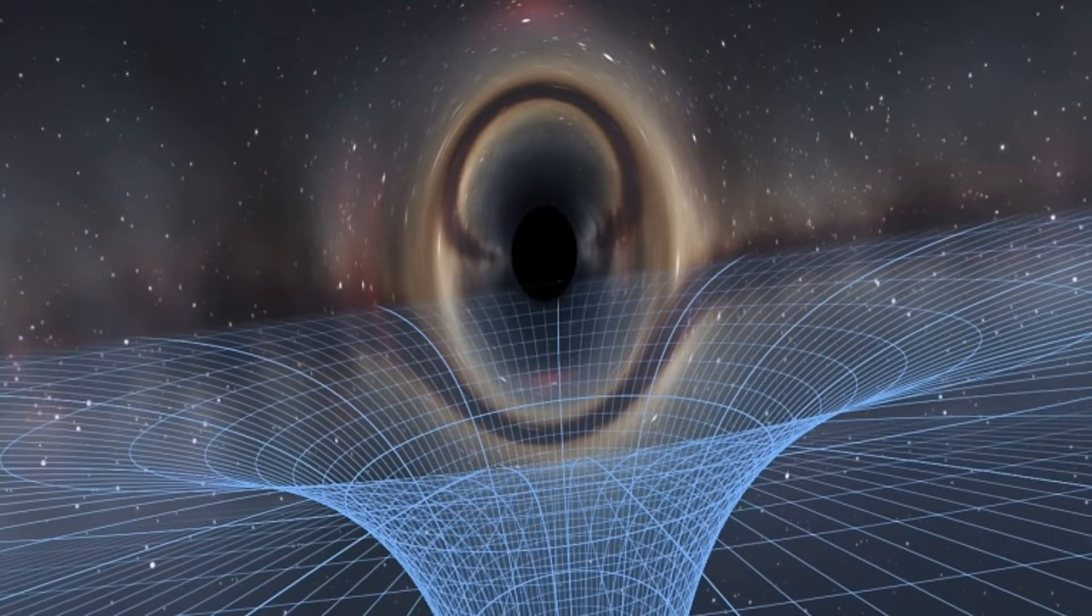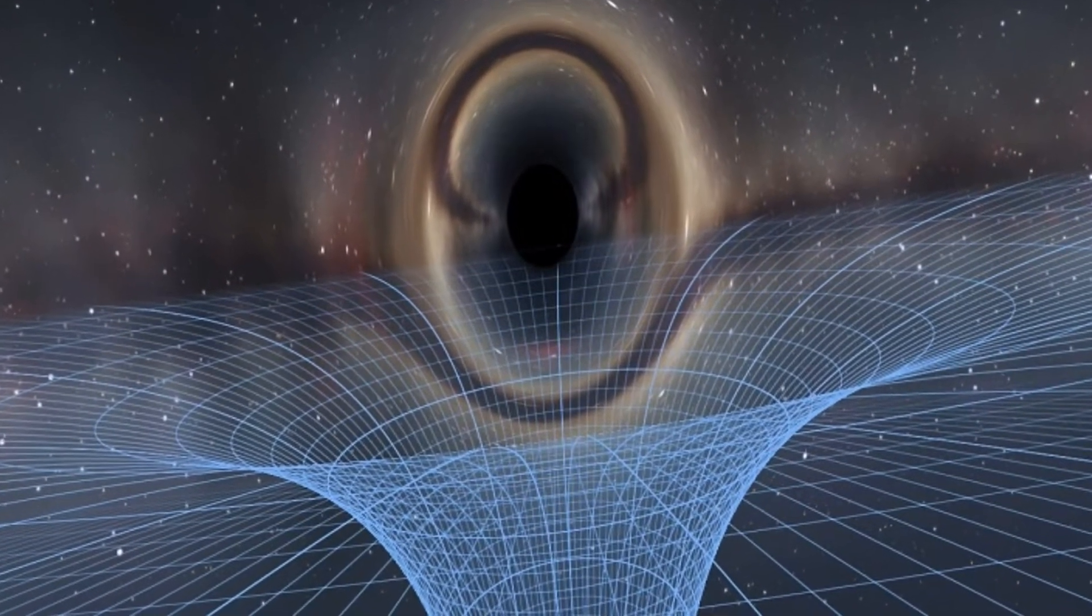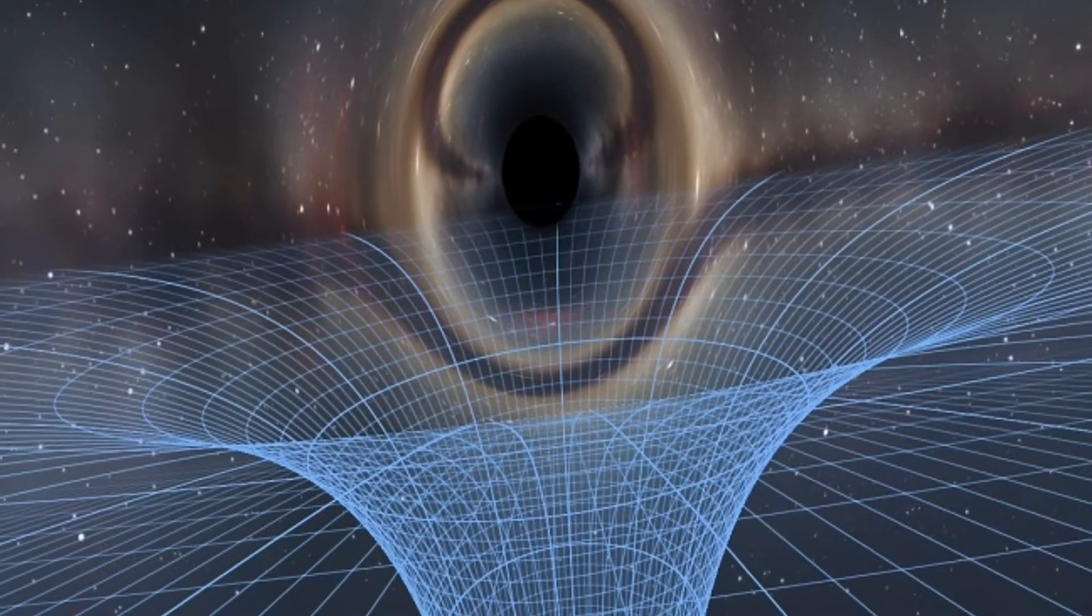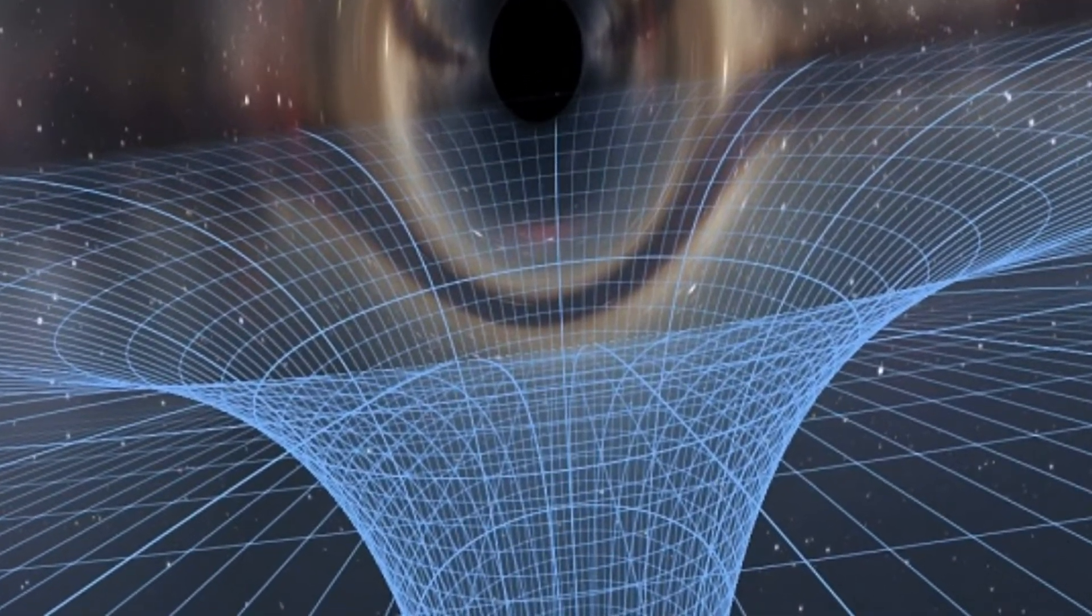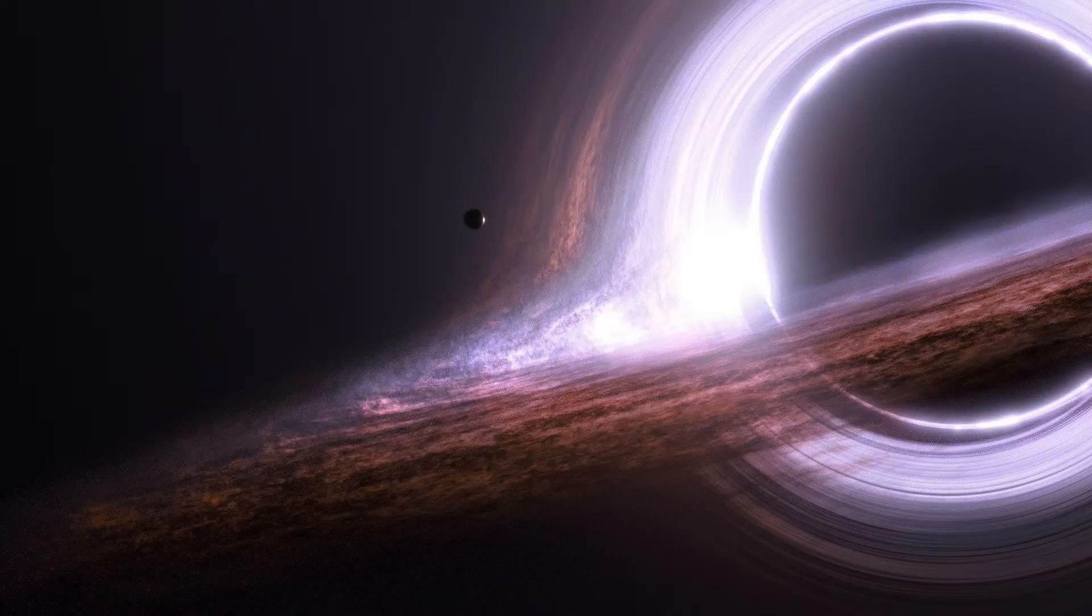In the case of a black hole, due to the infinite mass black holes possess, the space-time curves are much deeper, and that's the reason why even light cannot escape the black hole. This leads to another major theory.